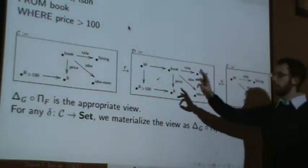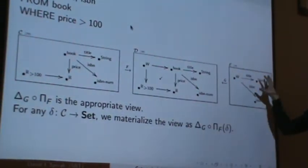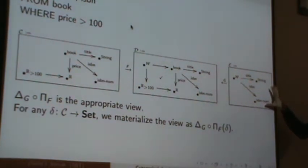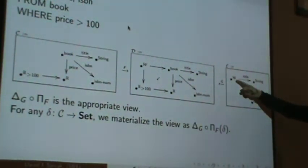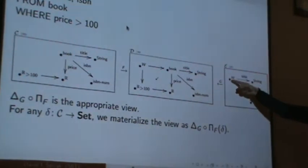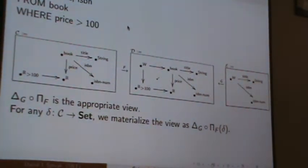And so if you start with any database state here and do this polynomial functor to get to here, then at the end of the day you're going to have the set of all books whose prices are bigger than 100, and their titles and ISBNs.